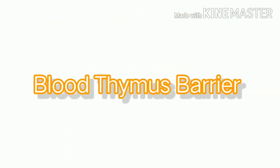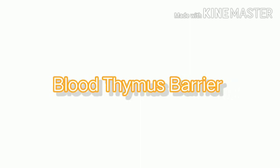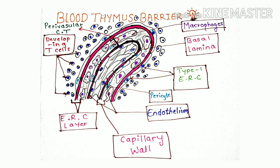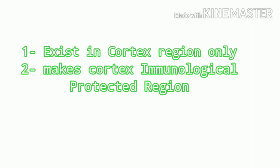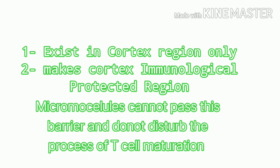Now let's study the most important feature of the thymic cortex: the blood-thymus barrier. The screen shows the diagram of capillaries found in the thymic cortex. The capillaries in the thymic cortex show a distinct thick basement membrane and are surrounded by the processes of epithelial reticular cells — this forms the blood-thymus barrier. As the name suggests, it is a barrier between blood-borne antigens and maturing T lymphocytes, existing only in the cortex region and making the cortex an immunologically protected region.